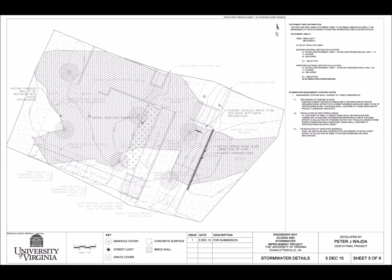This sheet goes into some more detail on the stormwater management plan that I discussed earlier. The large hatched area is the catchment basin for the site. Information on it is over on the right side of the plan, along with some more notes on the management strategy.